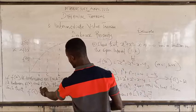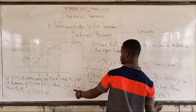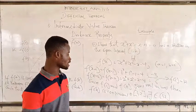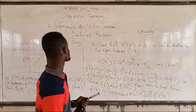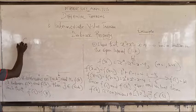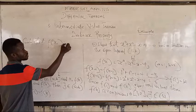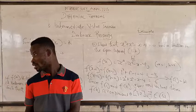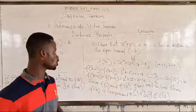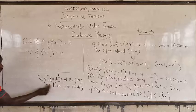Therefore, we can say that there exists some value C-naught such that F(C-naught) is equal to K, and F(C-naught) is equal to zero. That establishes the Intermediate Value Theorem. You can show it with a diagram.